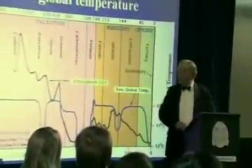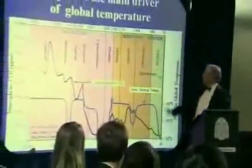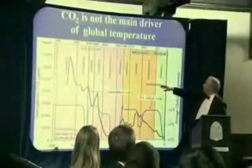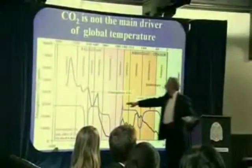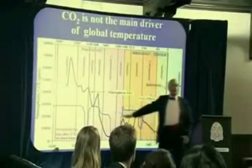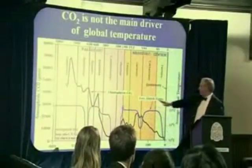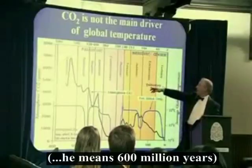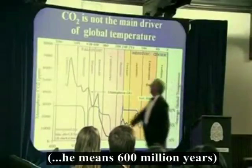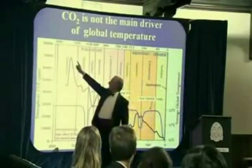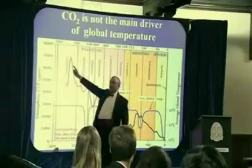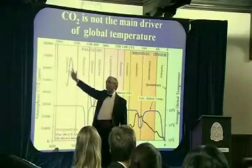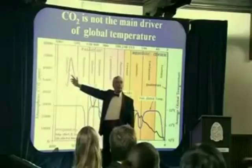Moving to the next slide, we get a rather prodigious mismatch again between CO2 concentration, which is the black line, and temperature concentration, which is the blue line, going right back to almost 600,000 years into the past. Here we had almost 7,000 parts per million of CO2 compared with 385 or thereby today.